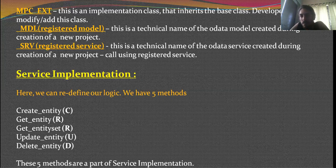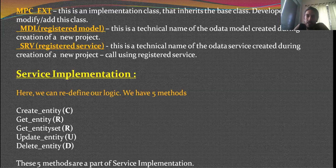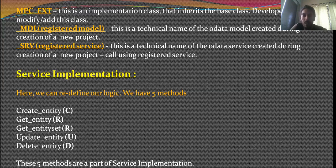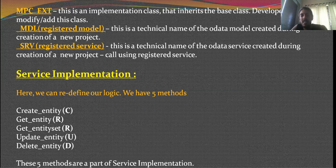Then you have the service implementation, which has five methods. When I say CRUD: you have Create, then Read — with a two-pronged approach: one reads a single entity record and the other reads the entire entity set list. Finally, you have Update Entity and Delete Entity. All five methods ensure that CRUD operations are fulfilled on your back-end side.